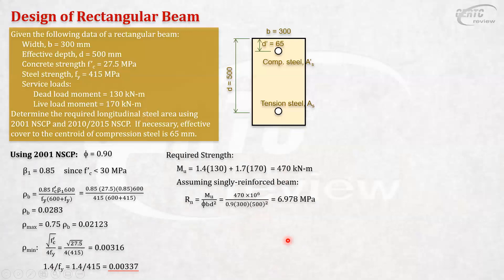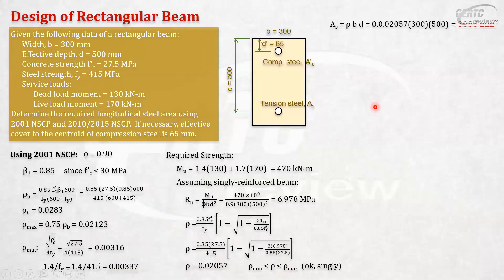Then, after that, we can get our rho. Our rho is 0.02057. Again, it is more than rho min, of course, so no problem. And it is still less than rho max. Less than rho max at 0.02057, while our rho max is 0.02012. Although almost, but since it is less than the maximum allowed by the code, this can still be designed as singly reinforced. So, singly reinforced still. Therefore, your rho is correct already. Then, we solve for AS, rho BD, and that's 3,086 square mm. Singly reinforced.